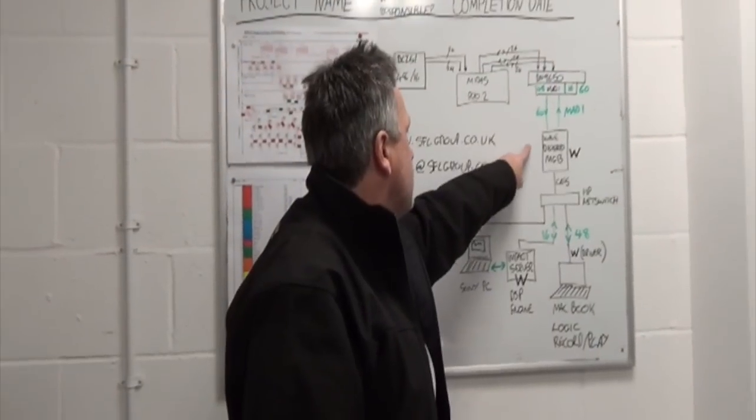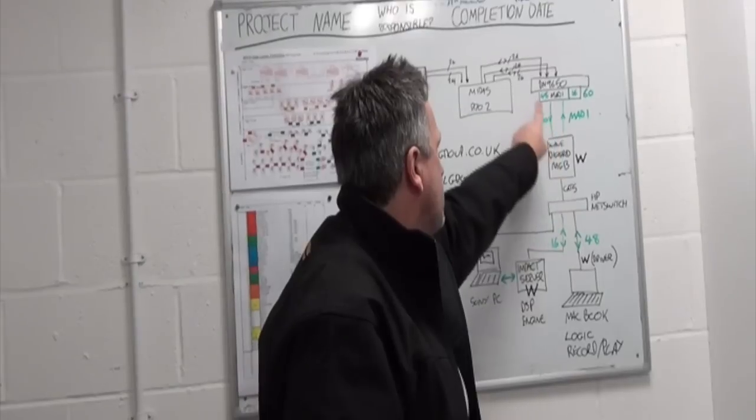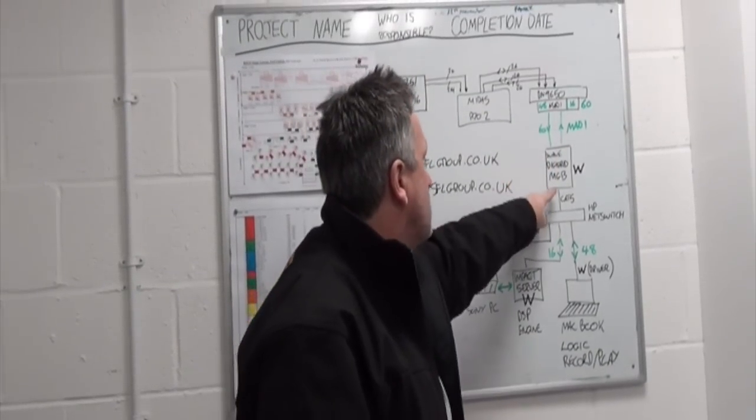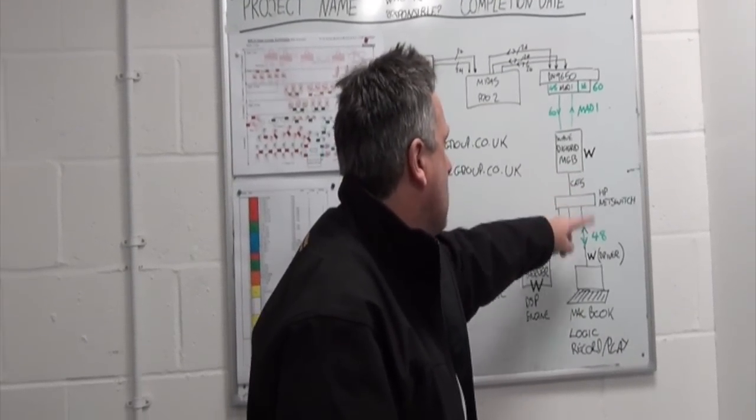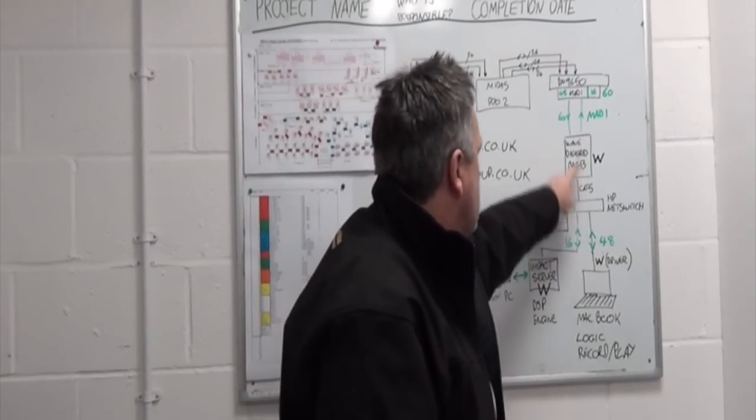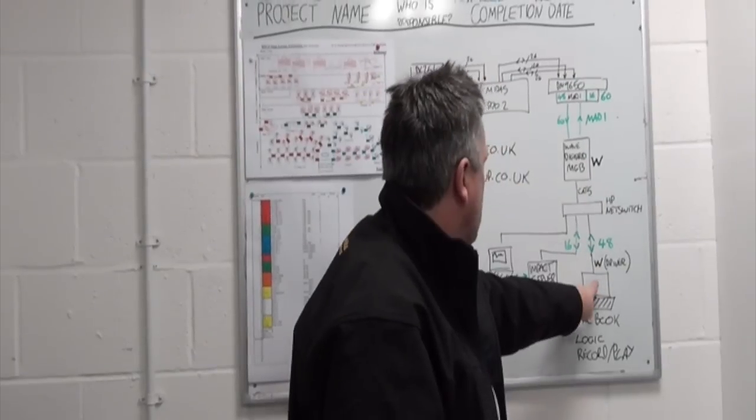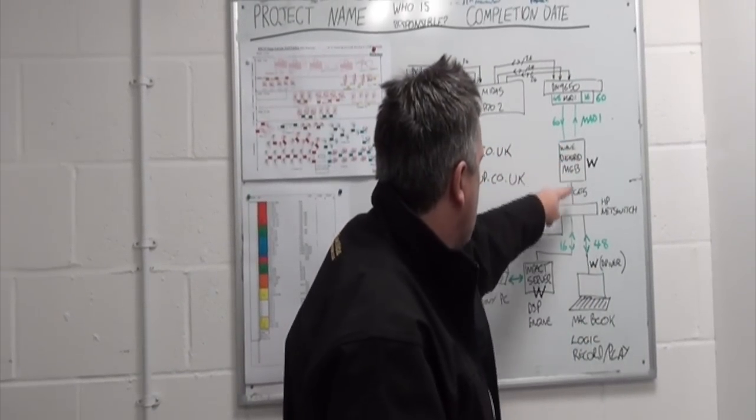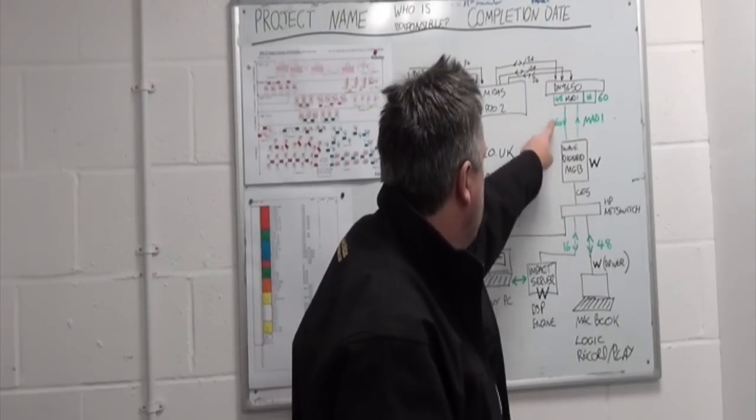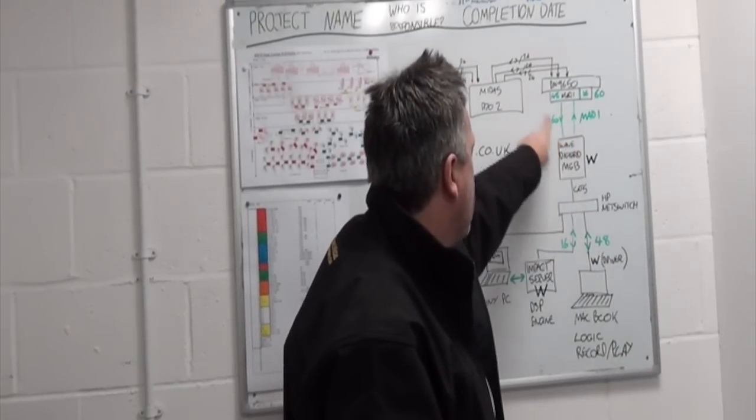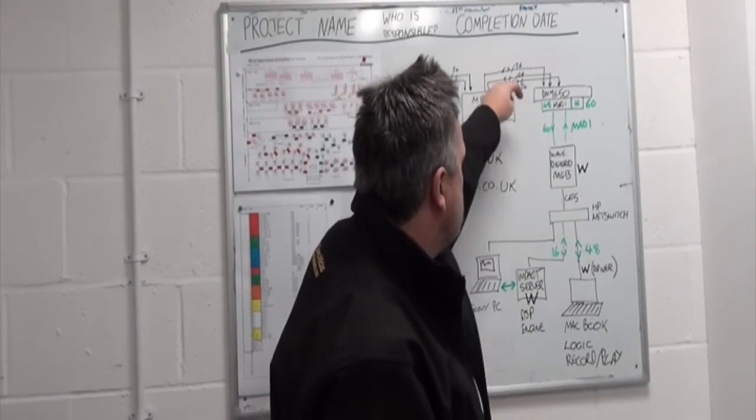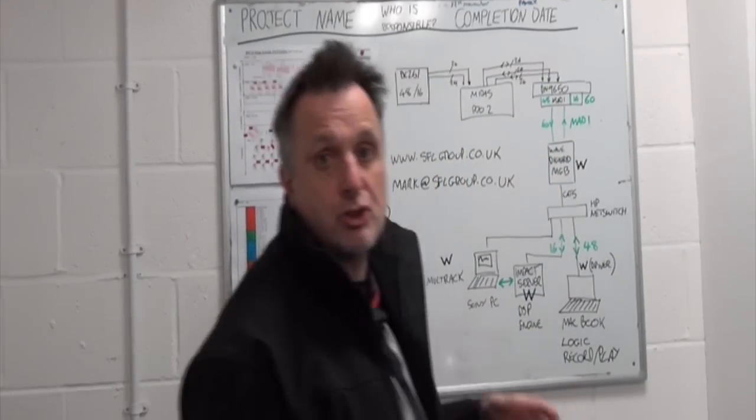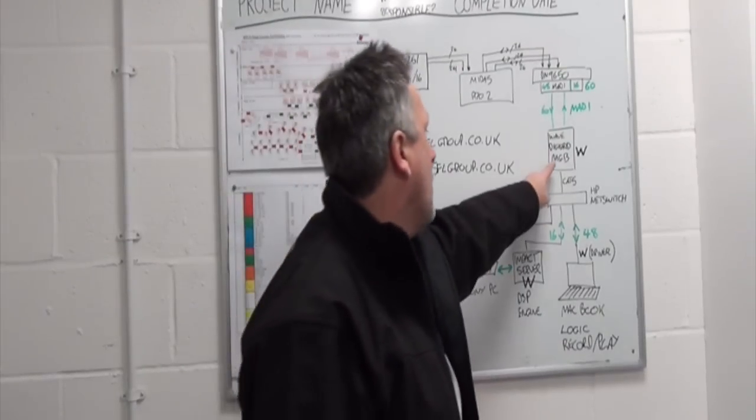The sound grid then hits my switch. And the switch then distributes the sound grid network to the Waves impact server, my MacBook Pro which is running Logic to do the record, and also allows me to interface my user interface to control the plugins. You can see the Waves DigiGrid MGB that I showed you in the rack. That takes the MADI stream that's been provided by the DN9650. We turn into the sound grid interface. At the moment I'm just running this through a cheap Hewlett-Packard gigabit network switch.